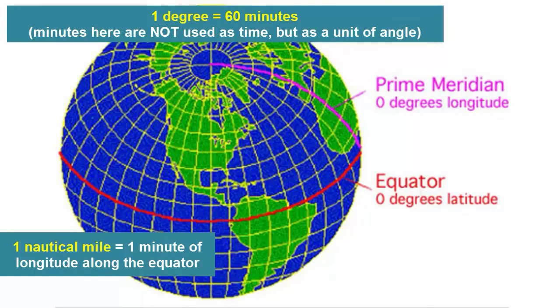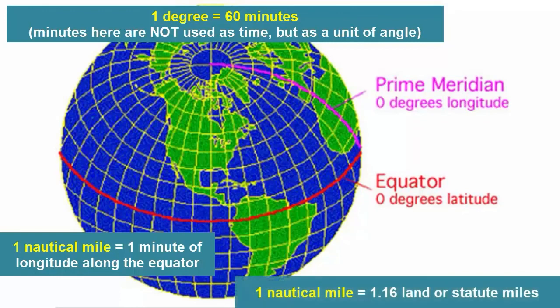Land or statute miles, which are what we usually refer to when we use the unit mile, are smaller than nautical miles by about 20 percent. One nautical mile equals 1.16 land or statute miles.